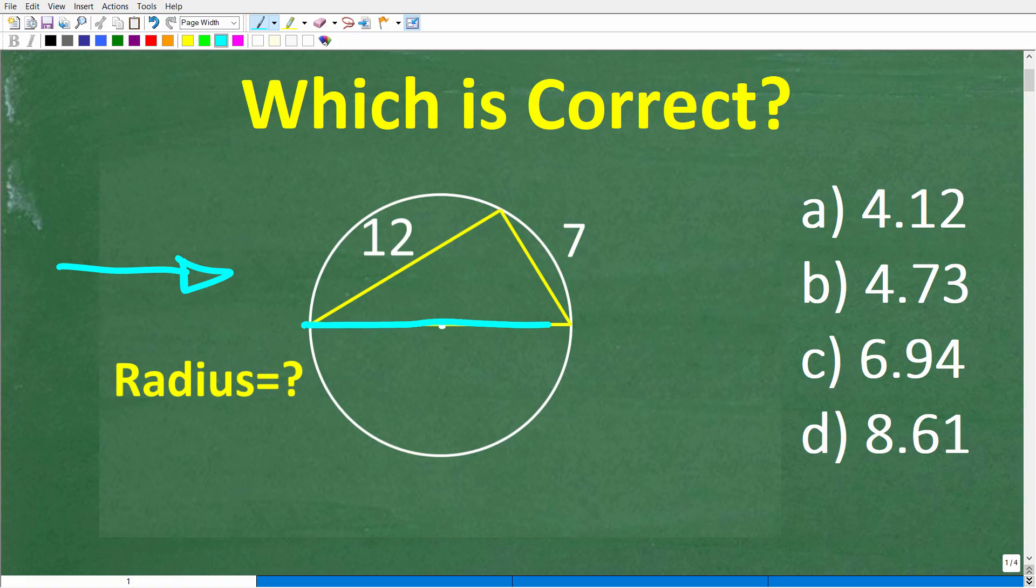But this part of the triangle is the diameter of the circle. In other words, it's the width of the circle going through the center right here. This side of the triangle is 12, and this side is 7. And the question is, we want to know the radius of the circle.